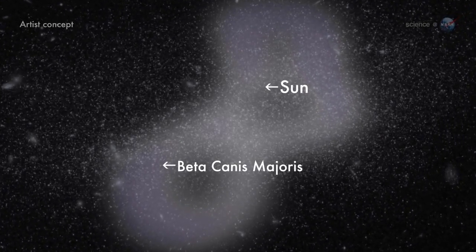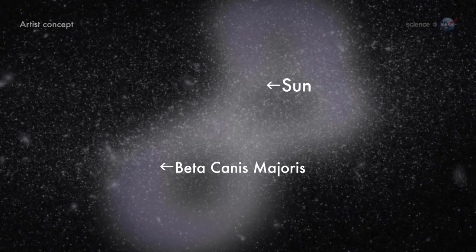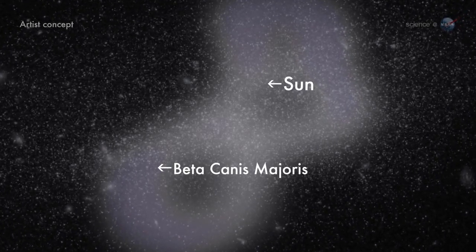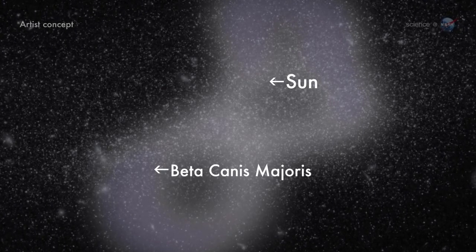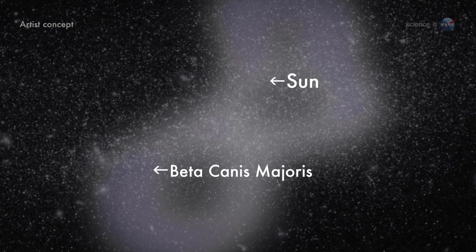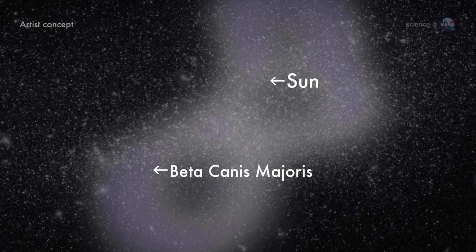Gas inside the bubble is very thin, 0.001 atoms per cubic centimeter, and very hot. Roughly a million degrees. A sharp departure from ordinary interstellar material.